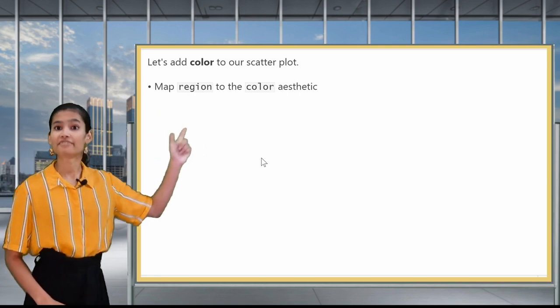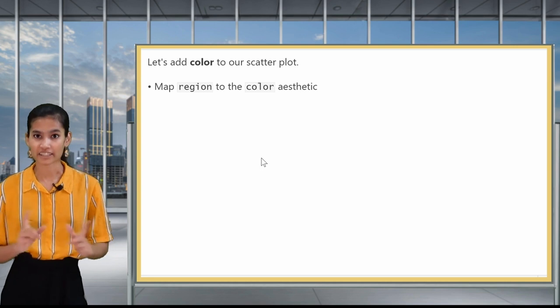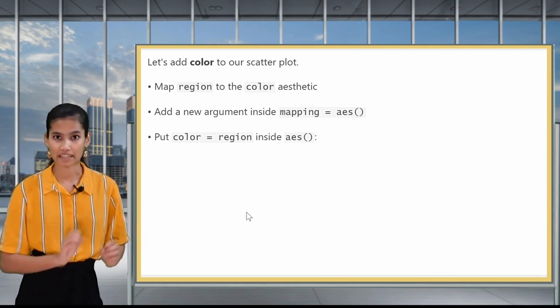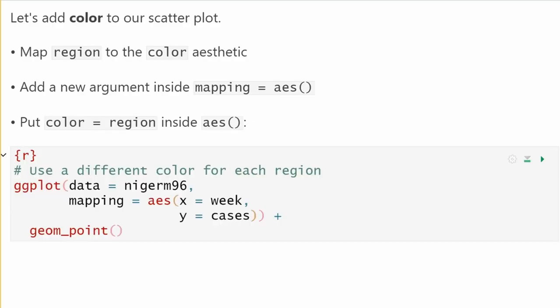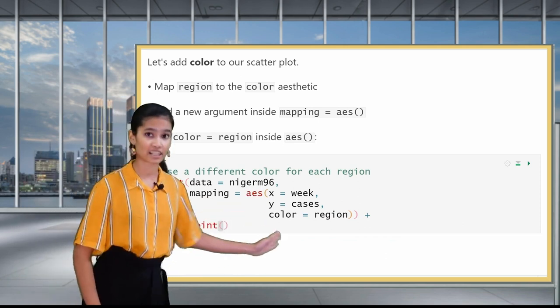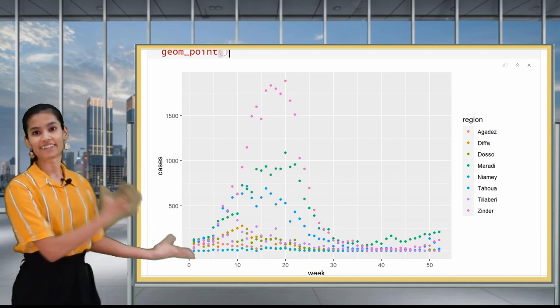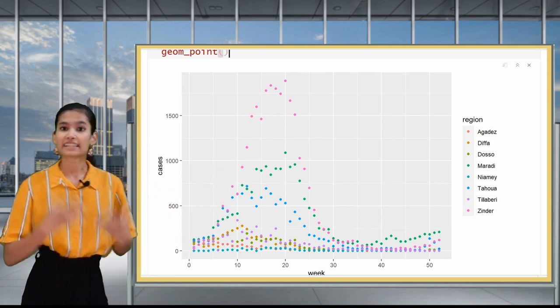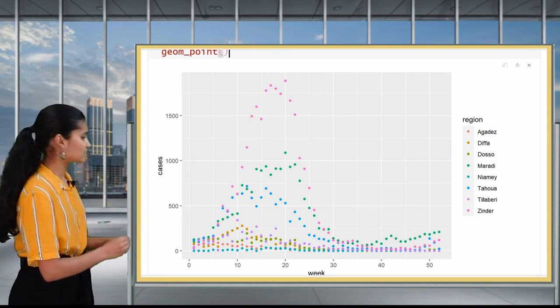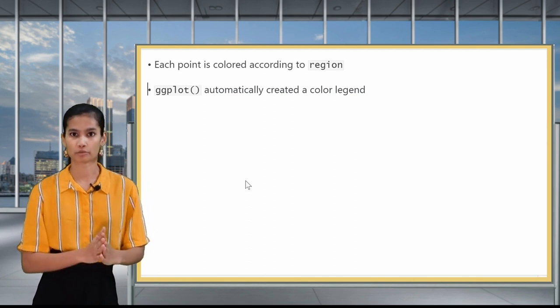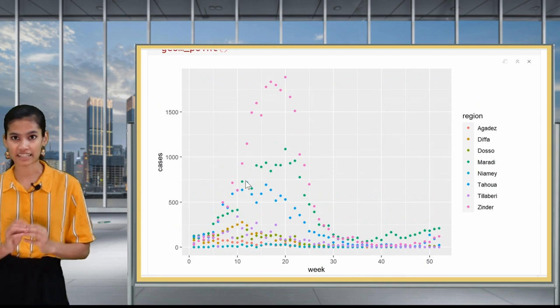So now we'll add color to the points of our scatterplot. We're going to color it by region. So we're mapping the region variable onto the color aesthetic just like we mapped week and cases to x and y. So here you will see that inside AES where we had x and y I added color. Now if I run this code it will produce this colored scatterplot. Here you can see that the points are colored differently according to which region that they're in. This gives us information about an additional third variable in addition to week and cases.